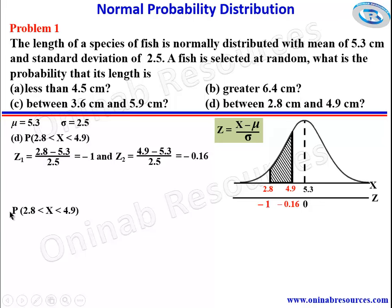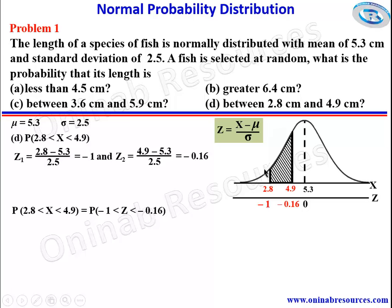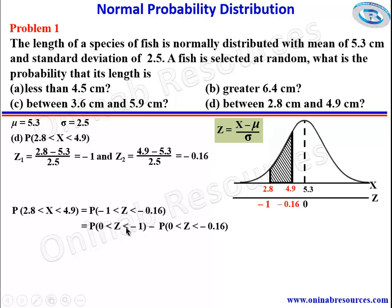This tells us the probability of the length between 2.8 and 4.9 is the probability of negative 1 < z < negative 0.16. We find the area from 0 to negative 1, and from 0 to negative 0.16, then subtract. That gives us P(0 < z < 1) minus P(0 < z < 0.16).